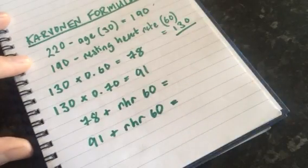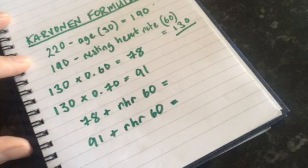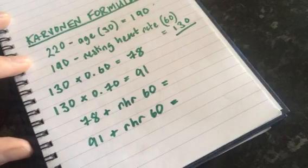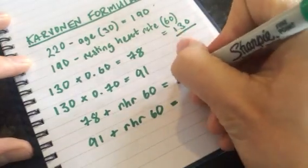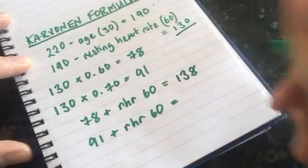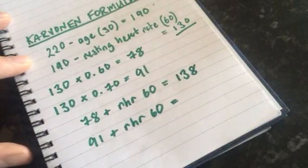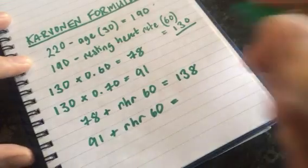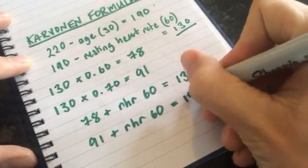There we go. I'm going to jump over to my calculator because my math is not the strongest. I've got 78 plus 60 equals 138, and then I've got my 91 plus 60 equals 151.